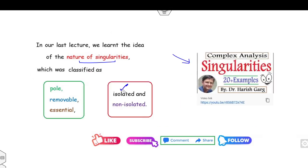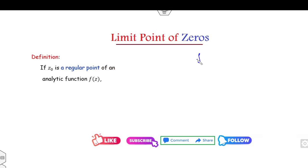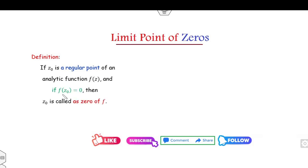I already explained the concept of isolated singularities, but in this lecture I will tell you another way. First of all, what is a zero? For any analytic function f(z), z equal to z₀ is said to be the zero of f(z). The zero means whenever you substitute the value z₀ into the given function, the answer will be zero — it is like the root of the function.